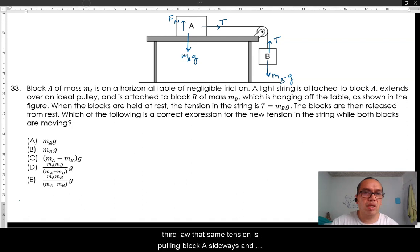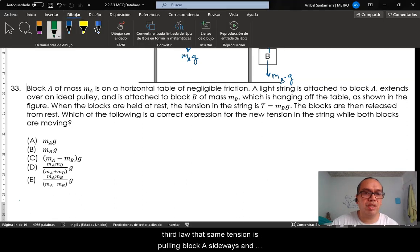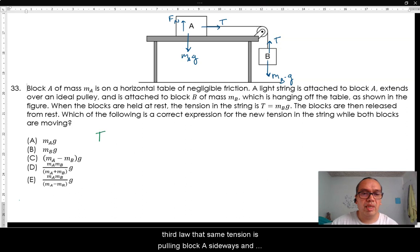So, in terms of the acceleration that we want, the tension on block A is equal to MA times the acceleration, and MBG minus the tension is equal to MB times the acceleration.